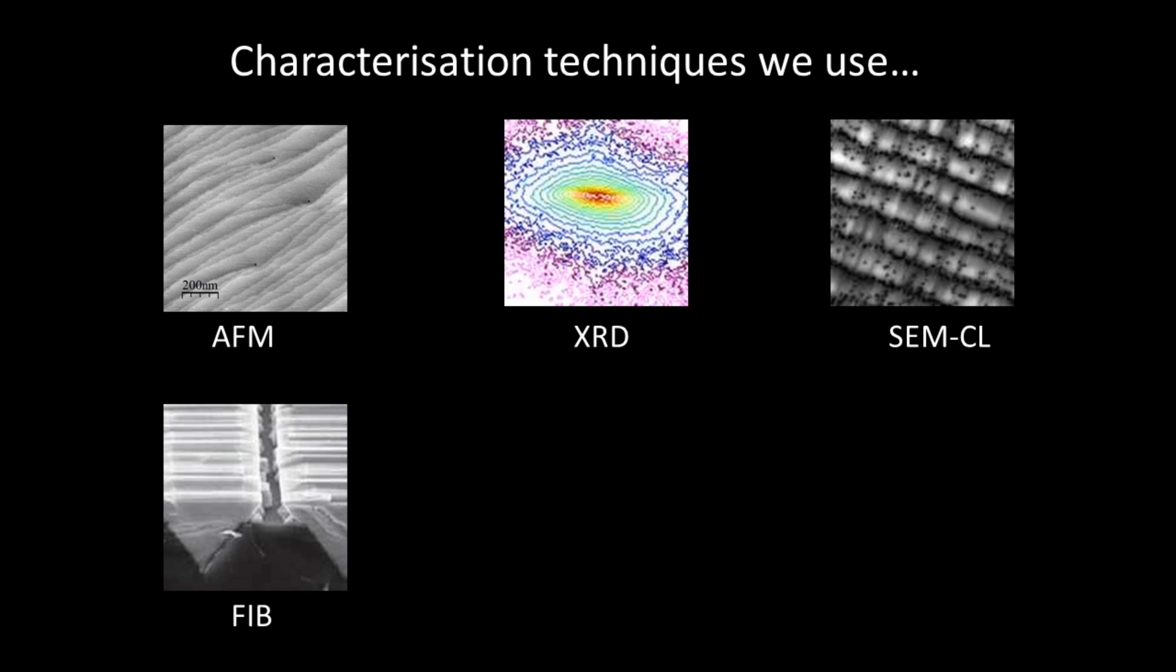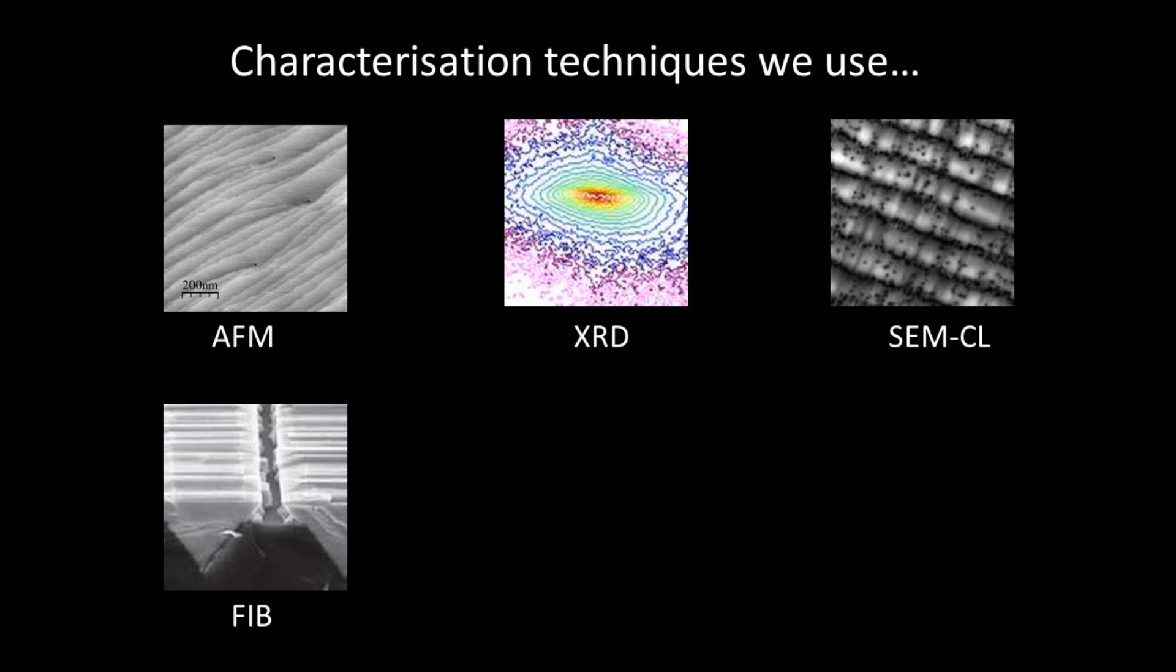We have a focused ion beam microscope, which is what we use to dig little holes in the sample and look at them from different angles and take different sections. And then we can do really detailed, up to atomic resolution microscopy using a transmission electron microscope.